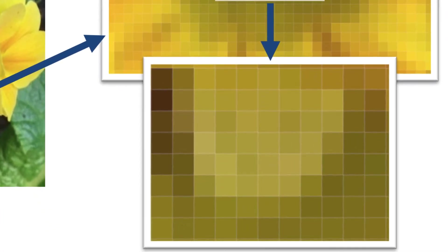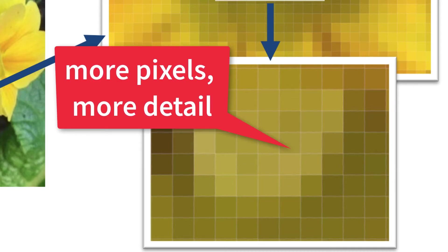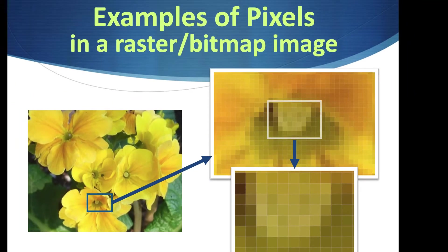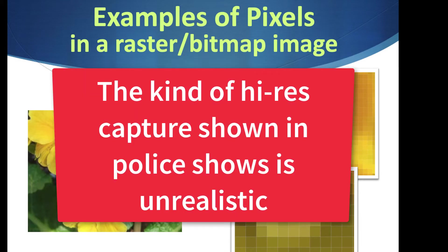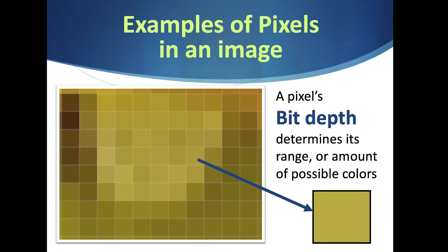The higher the resolution — the more pixels you capture — the more detail you'll have when you zoom in. So if you ever watch a police show where they zoom into someone's teeth or eyeball from a convenience store camera, that's usually fake. They would need super high resolution to do something like that, so that's unrealistic TV stuff.